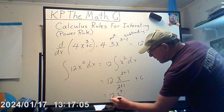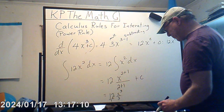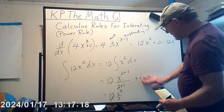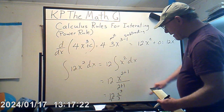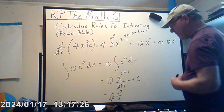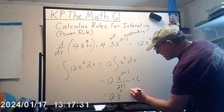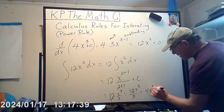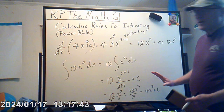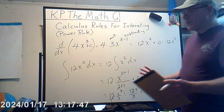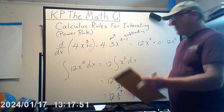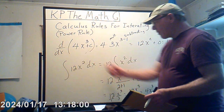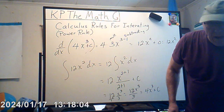This gives us 12x cubed over 3. Since 12 over 3 is 4, we get 4x cubed plus C as the general answer. It's not arbitrary — it is a calculus rule. And you can see it gets back to where you started from. You just have to keep in memory what you're doing here.